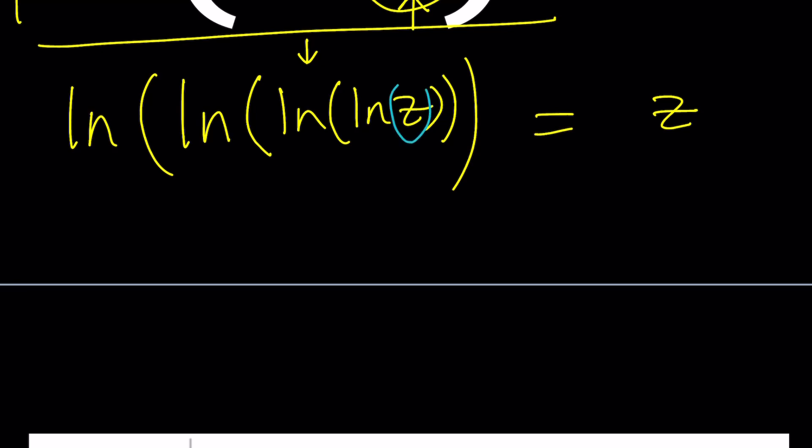You could also do the following. z is now equal to something else: z is equal to ln of ln of ln of ln z. So you could also substitute that, which is going to give you a really long expression faster. But the idea is to get the pattern.